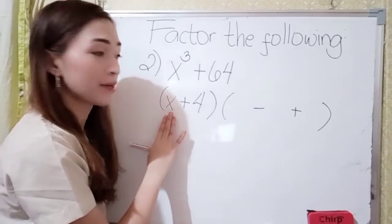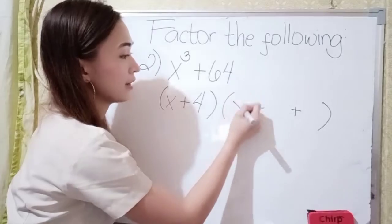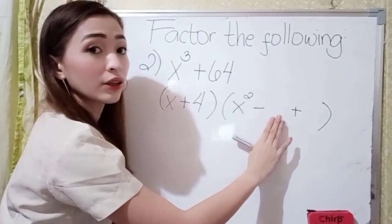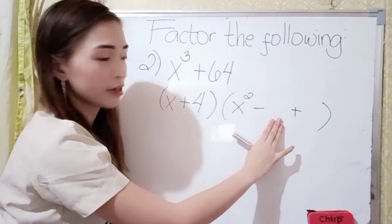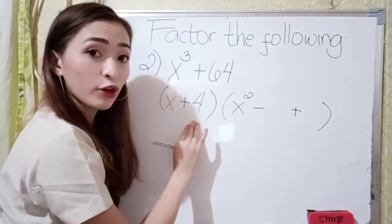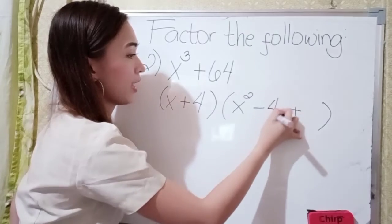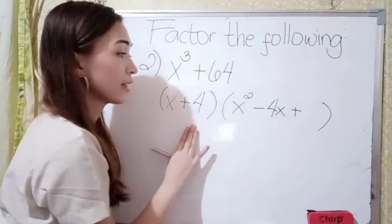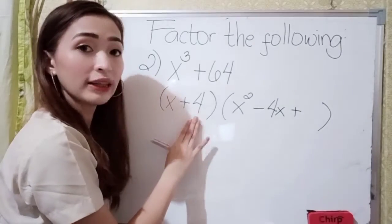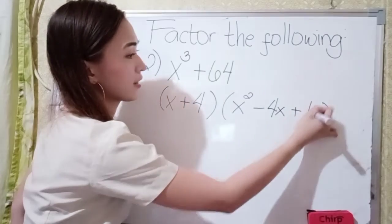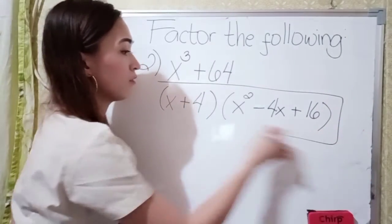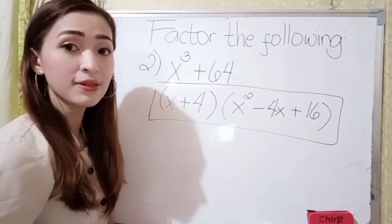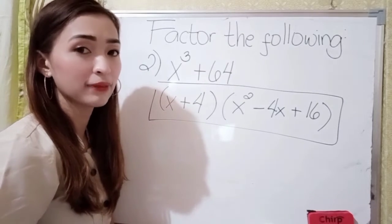Square the first term. So, x times x is x squared. That is our first term. For our middle term, what we're going to do is multiply the first and last term. So, x times 4, we have 4x. In our last term, we're going to square the last term. 4 times 4 is 16. So, that is our final answer: x plus 4 times x squared minus 4x plus 16.